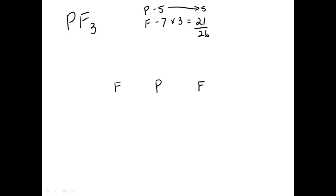Draw the symbols for the atoms and start distributing electrons. You might need to backtrack with some of these. Let's start by giving phosphorus eight valence electrons to make it happy.